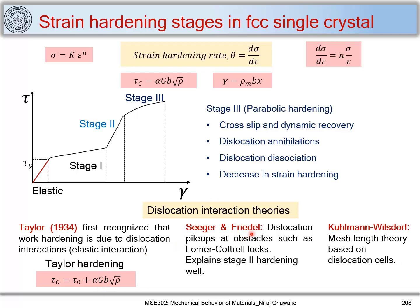Seeger and Friedel proposed that dislocation pile-ups at obstacles such as Lomer-Cottrell locks resist the movement of other dislocations on slip planes, contributing to strain hardening and explaining stage two. Kuhlmann-Wilsdorf proposed that when dislocation density increases, dislocations form dislocation cells — edge dislocations align and form a cell structure within the grain, and this structure results in strain hardening and increased strength.